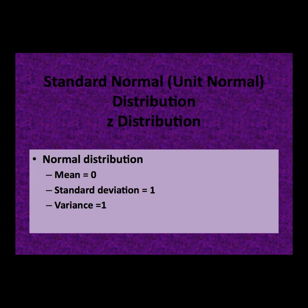Recall that the standard normal distribution, also called the unit normal or z-distribution, is the normal distribution that has a mean of 0 and a standard deviation of 1, and therefore a variance of 1.